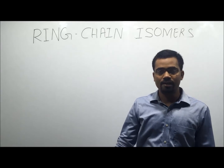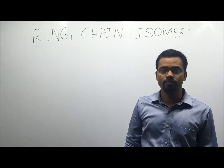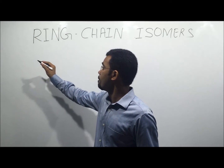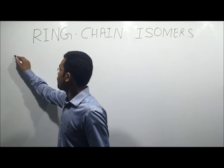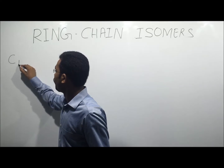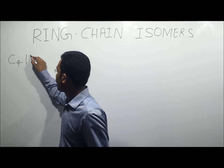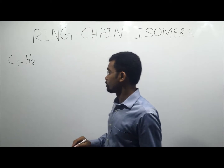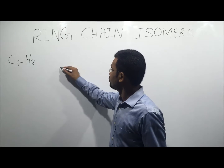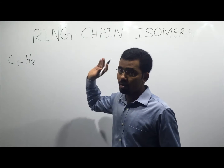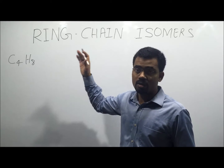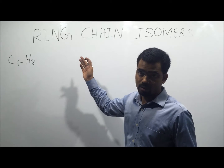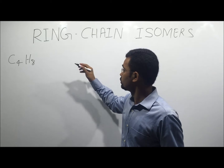Let us see some examples. Consider the molecular formula C4H8. We are going to draw some structural isomers and find the relationship between the given structural isomers.